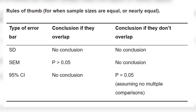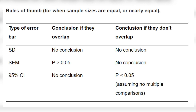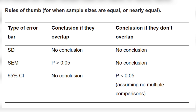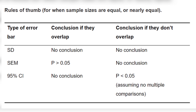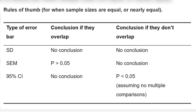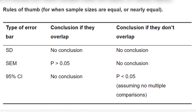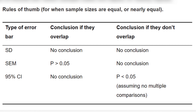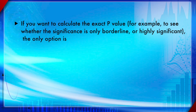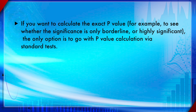For standard error of the mean (SEM): if SEM error bars overlap, the p-value is greater than 0.05 and not statistically significant; if they do not overlap, no valid conclusion can be drawn. For 95% CI: if the CIs do not overlap, the p-value is less than 0.05. If the 95% CIs do overlap, again no valid conclusion can be made. To calculate the exact p-value — for example, to determine whether significance is borderline or highly significant — you must use standard tests such as t-test, ANOVA, F-test, or chi-square test.